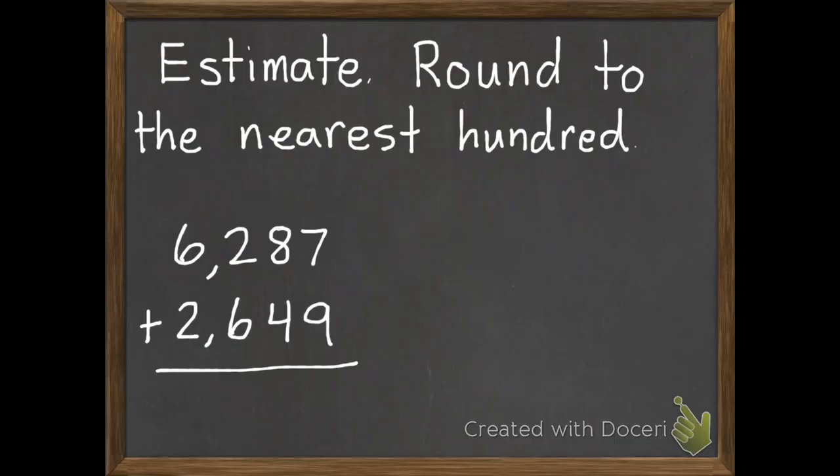So my instructions say to round to the nearest hundred. So I'm going to round each of these two numbers to the hundreds. So 6,287, deciding if that two is going to stay the same or if it's going to go up to a three. Since the number after it's five or higher, it will go up to a three. So that rounds to 6,300.